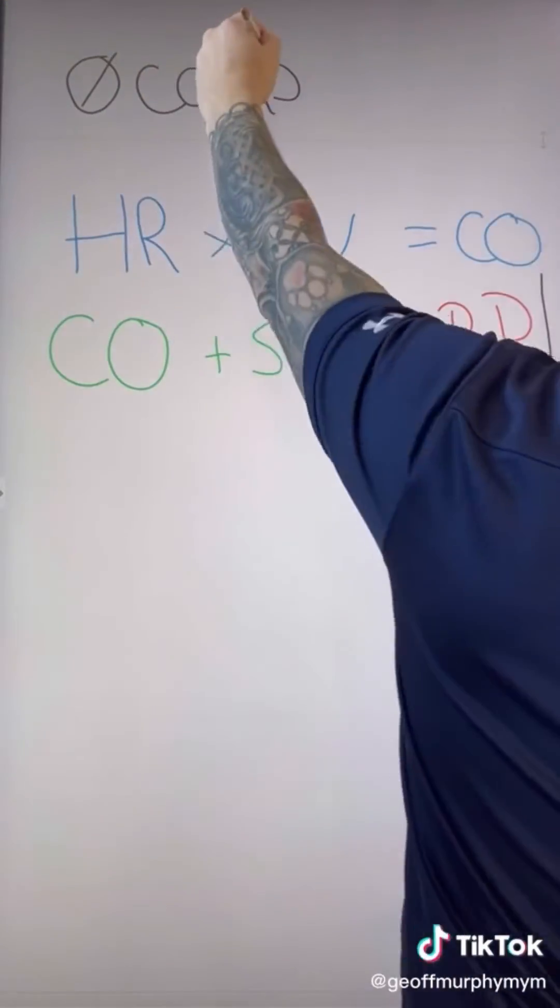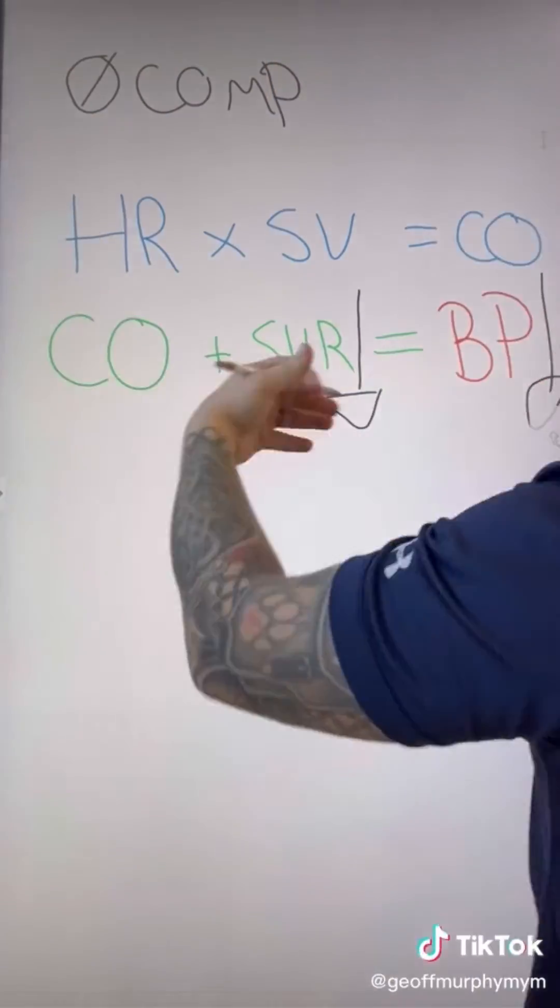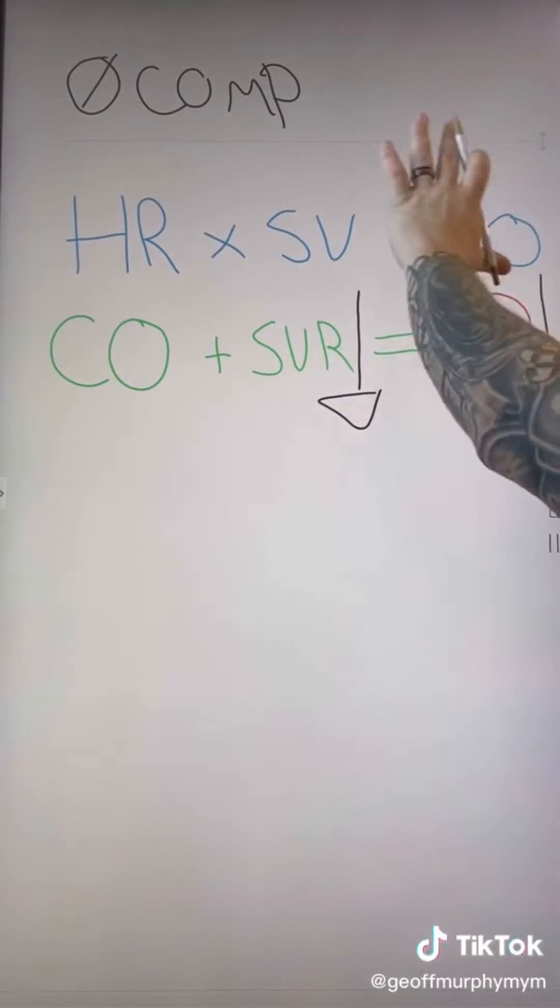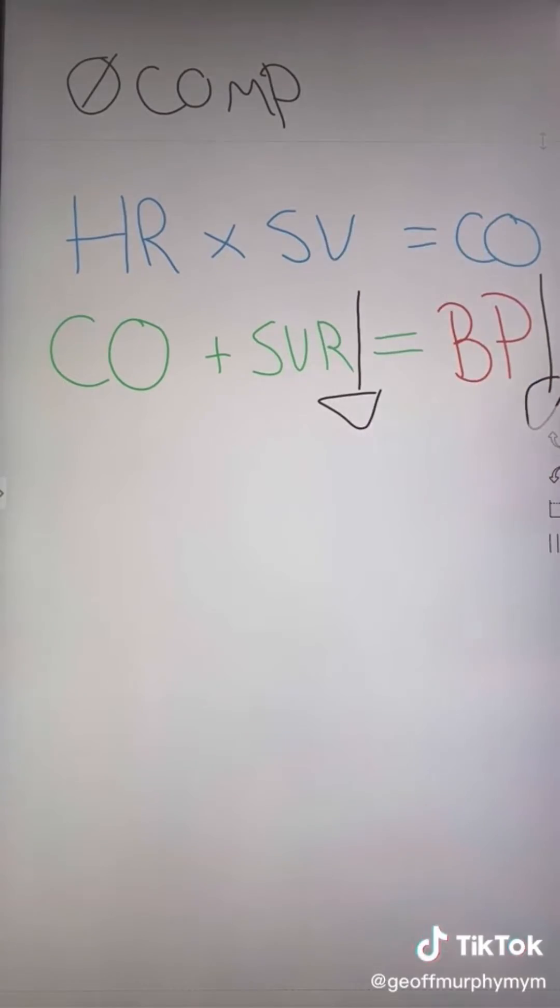Meaning that typically we would have things like increased heart rate, increased stroke volume, and increased cardiac output to compensate for the decreasing blood pressure because of the decrease in stroke volume.